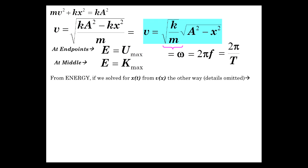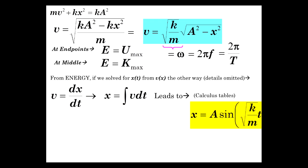So let's now from energy, which is what we are considering here, let's go the other way around, solve for x of t from v. V is a function of x. So we have v equals dx dt, x equals integral of v dt. And that leads to, from tables of calculus, actually equation 12 in your calculus sheet, we have x equals A sine of square root of k over m times t plus c.